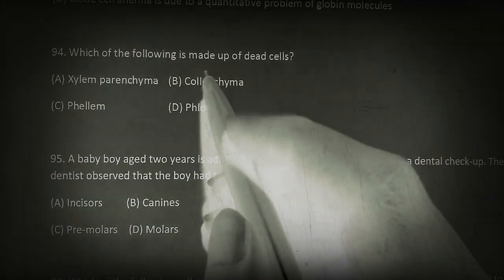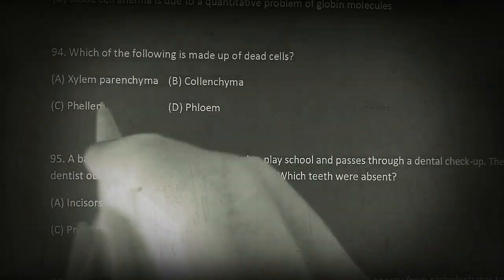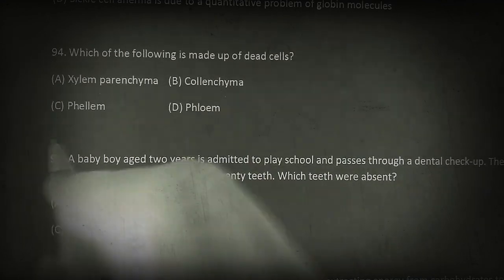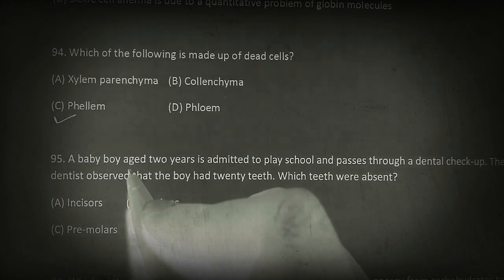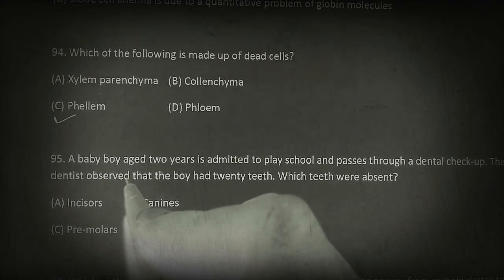Which of the following is made up of dead cells? Xylem parenchyma, collenchyma, phellum, or phloem? So the phellum, or cork, consists of dead and compactly arranged rectangular cells that possess suberized cell wall.